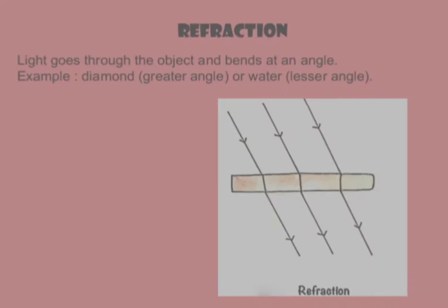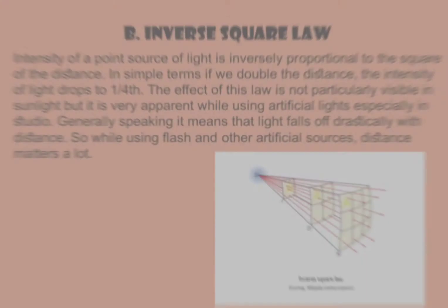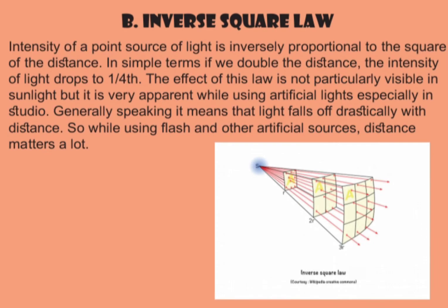Next is refraction — light goes through an object and bends at an angle. An example is a diamond, which produces a greater bending angle, or water, which produces a lesser angle.